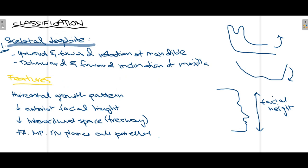The etiology of deep bite consists of two parts: skeletal abnormality or dental abnormality. For skeletal abnormalities, there is something wrong with either the maxilla or the mandible. When the mandible rotates upward and forward, overbite tends to increase. Similarly, if the maxilla moves downward and forward, it also leads to increased overbite and thereby deep bite.